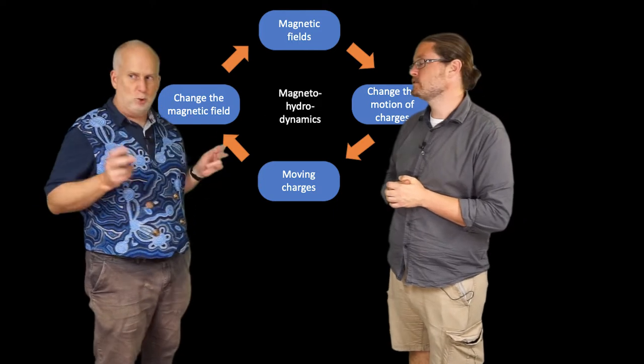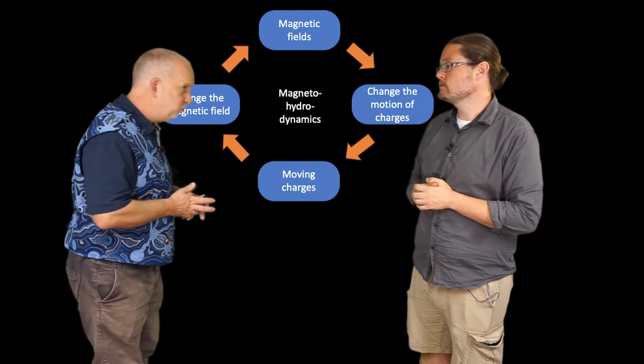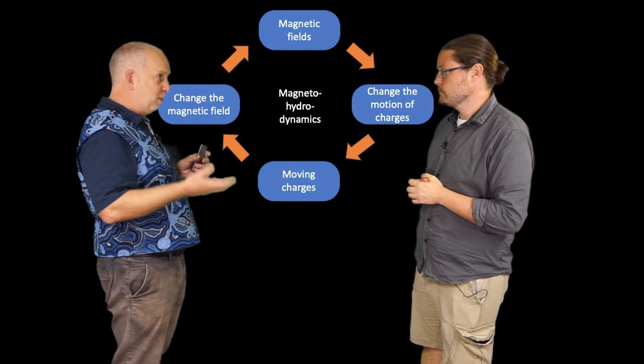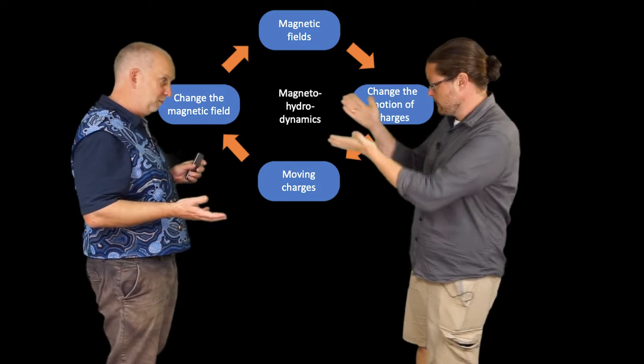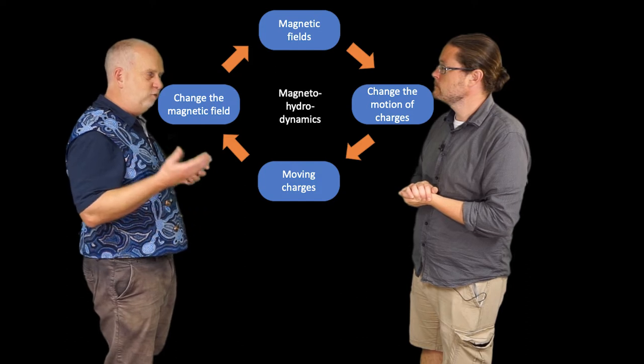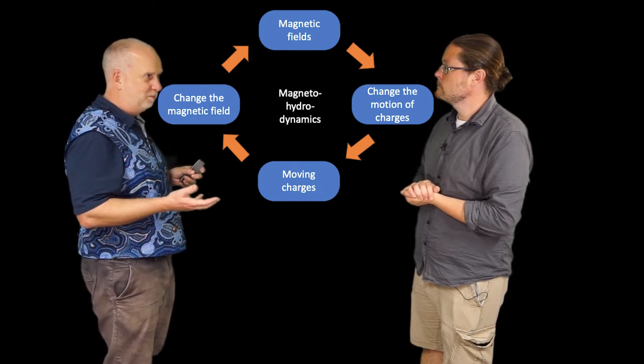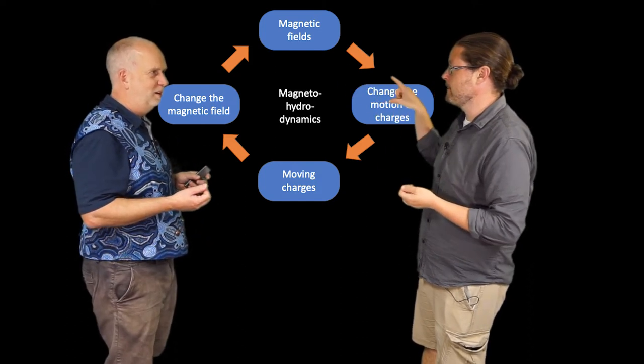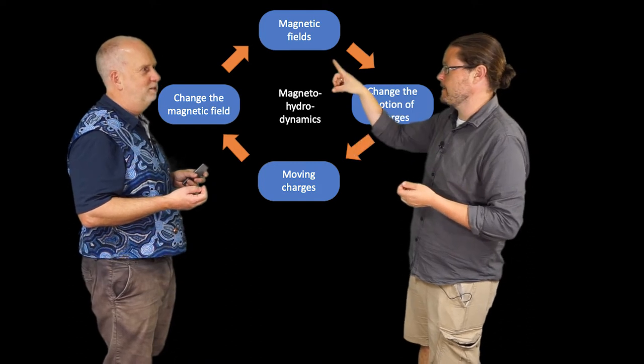Yep. And it's complicated because if you get a magnetic field, that will affect the motion of ionized particles, like we've just seen. Yep. But ionized particles are electric currents; electric currents direct magnetic fields. So yeah, one affects the other, but that affects the same thing.